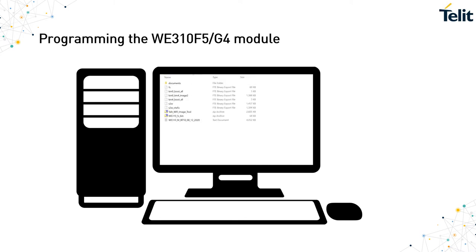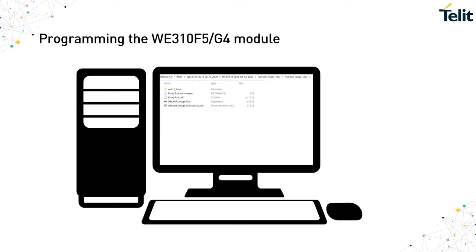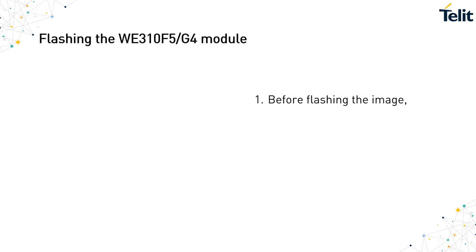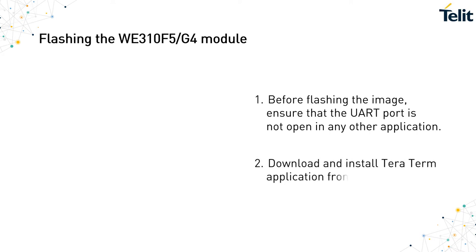Download and unzip the TELIT Wi-Fi Image Tool. Open the TELIT Wi-Fi Image Tool folder, then open the TELIT Wi-Fi Image Tool application. Before flashing the image, ensure that the UART port is not open in any other application. Download and install the TELIT Wi-Fi Image Tool application from the open source location.